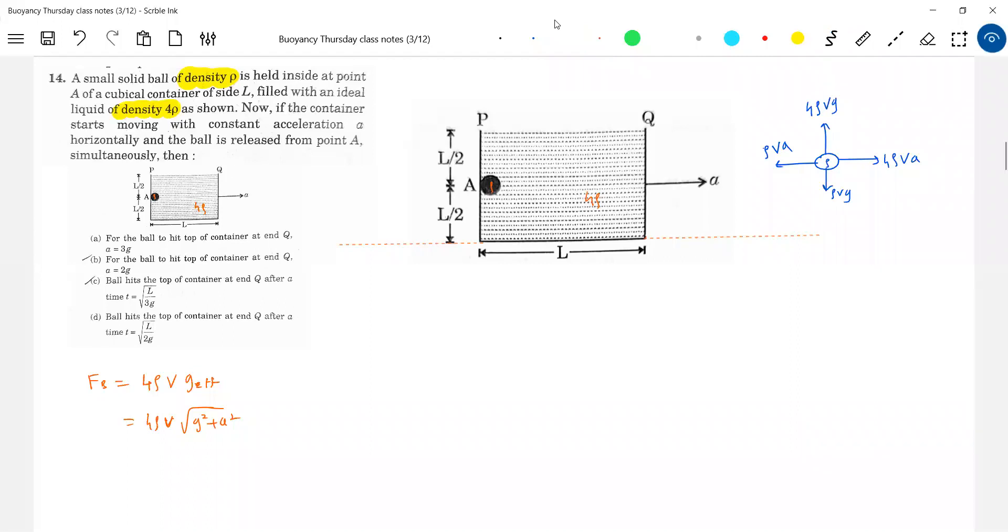When you take resultant of these two, what do you get? It should be equal to this much only. So just to make problem little bit very simple, the approach will be it is being done like this. Therefore what is the resultant force that will be acting on the solid ball? 3 rho Vg. So then it will act in this direction.